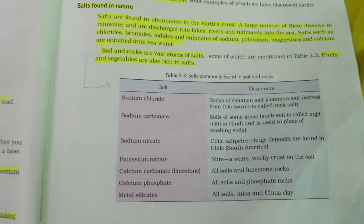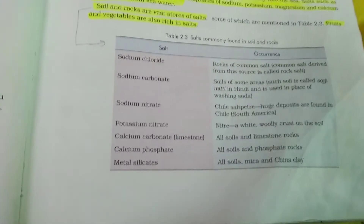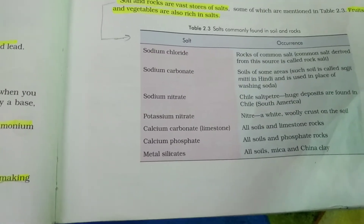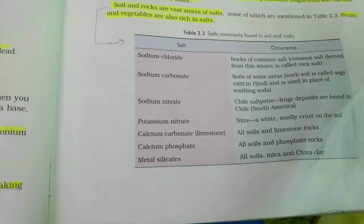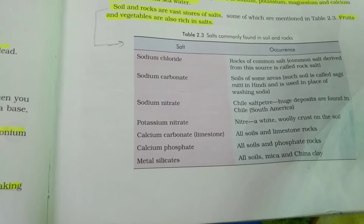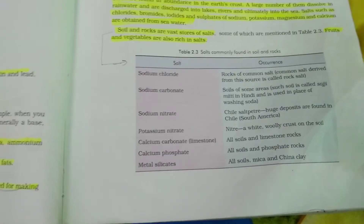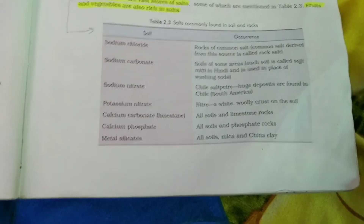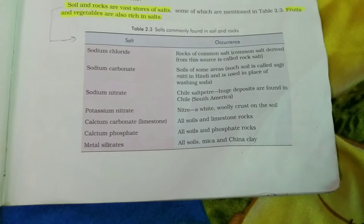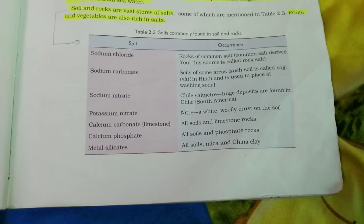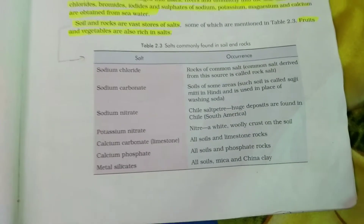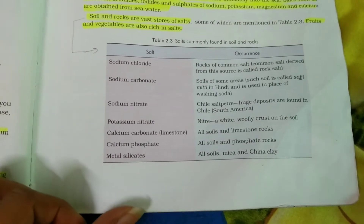There are some salts given in the table. Fruits and vegetables are also rich in salt. First is sodium chloride — rock salt is obtained from rock sources. Sodium carbonate occurs in the soils of some areas; this soil is called saji mitti in Hindi and is used in place of washing soda. Third is sodium nitrate; huge deposits are found in Chile in South America. Potassium nitrate forms a white woolly crust on soil. Calcium carbonate is called limestone, found in all soils and limestone rocks. Calcium phosphate is found in all soils and phosphate rocks. And metal silicate is found in all soils, mica and china clay.